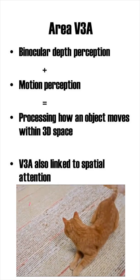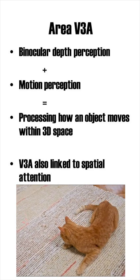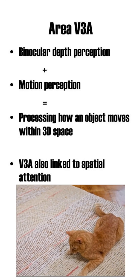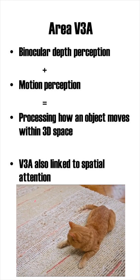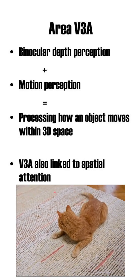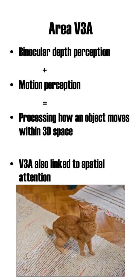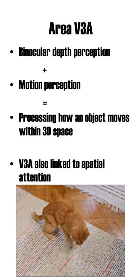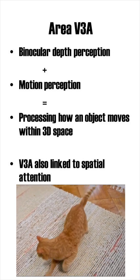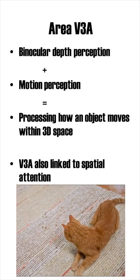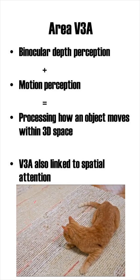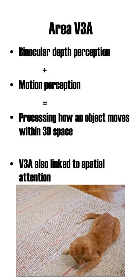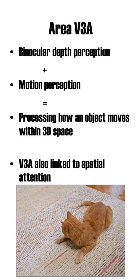Neurons in area V3a are also sensitive to motion. With these functions combined, V3a is an area that is crucial for tracking moving objects in a three-dimensional space. Since following moving objects also requires focus, V3a has also been linked to spatial attention.